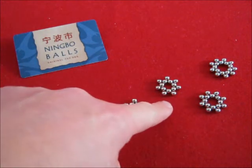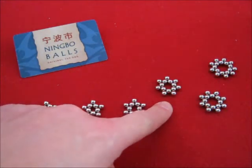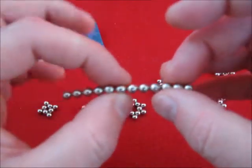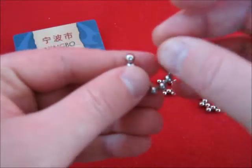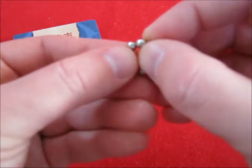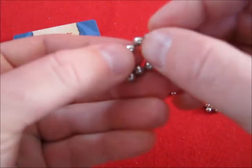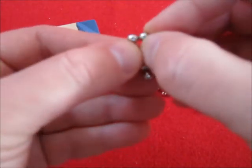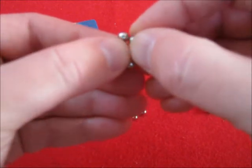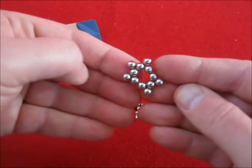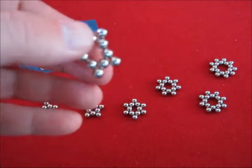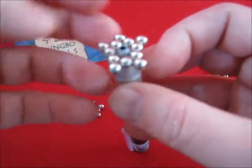Now we go to the 7 pointed star. We start with 12. Make this shape. And the easiest way to do this is to place it on top of a pen.